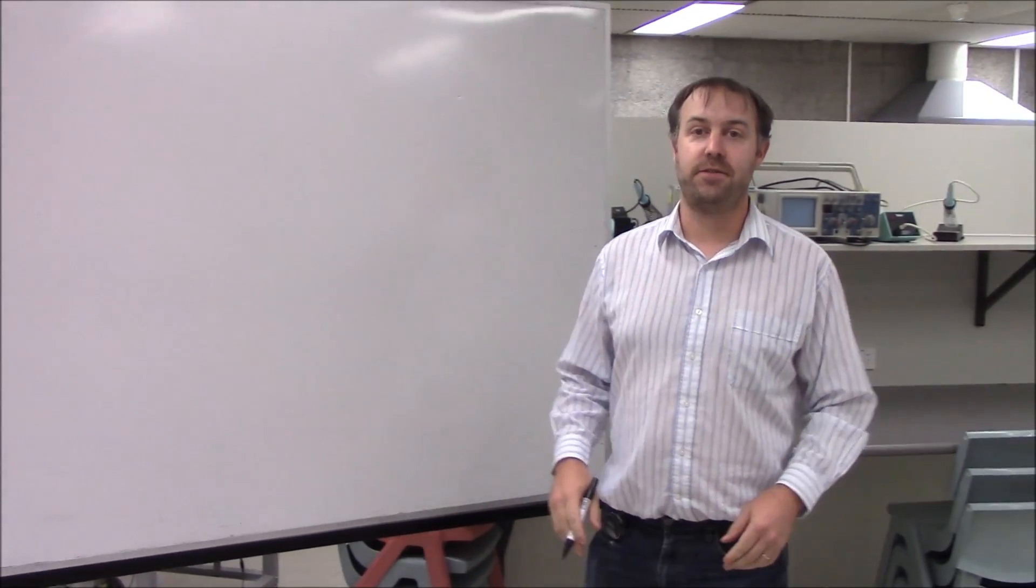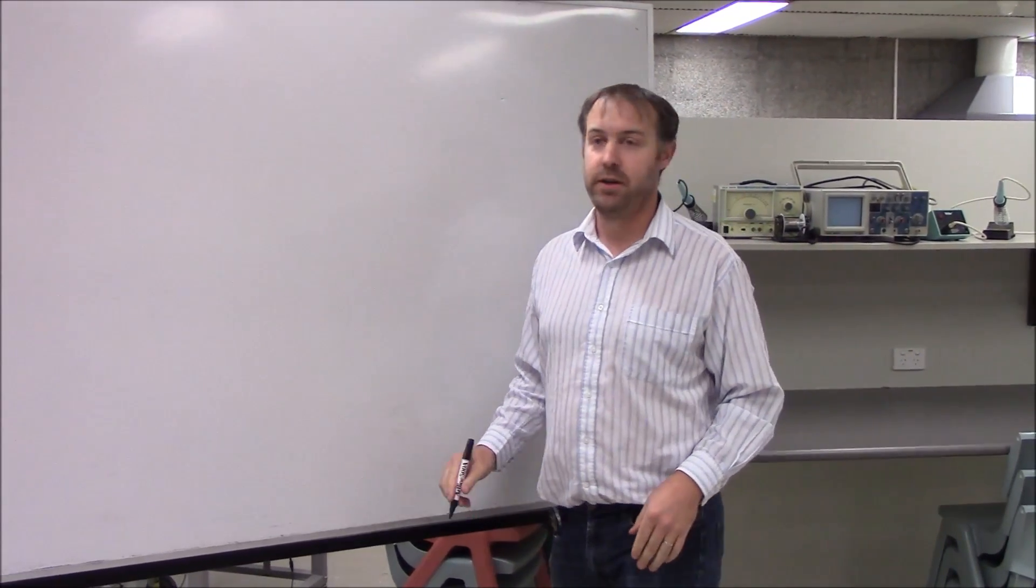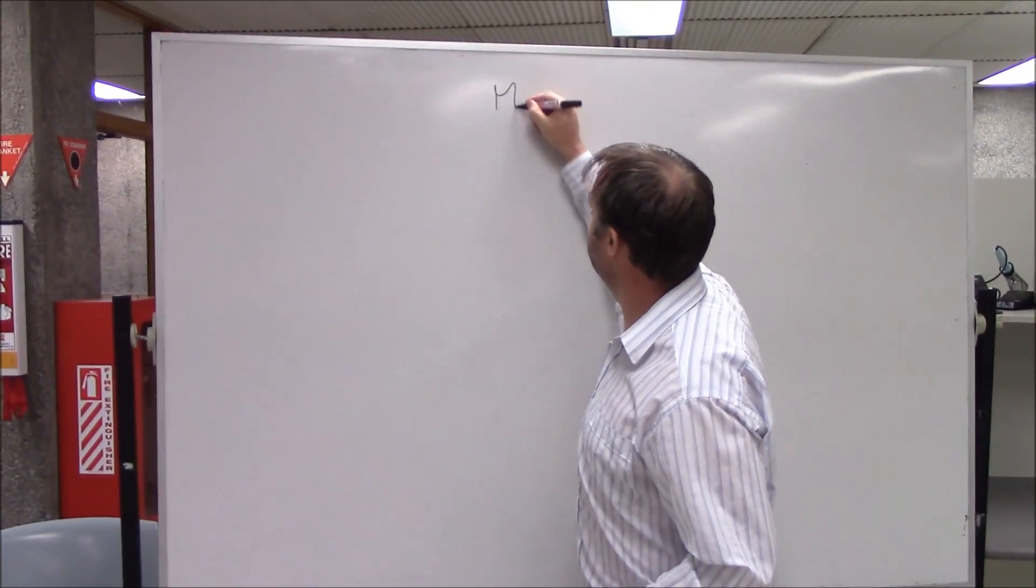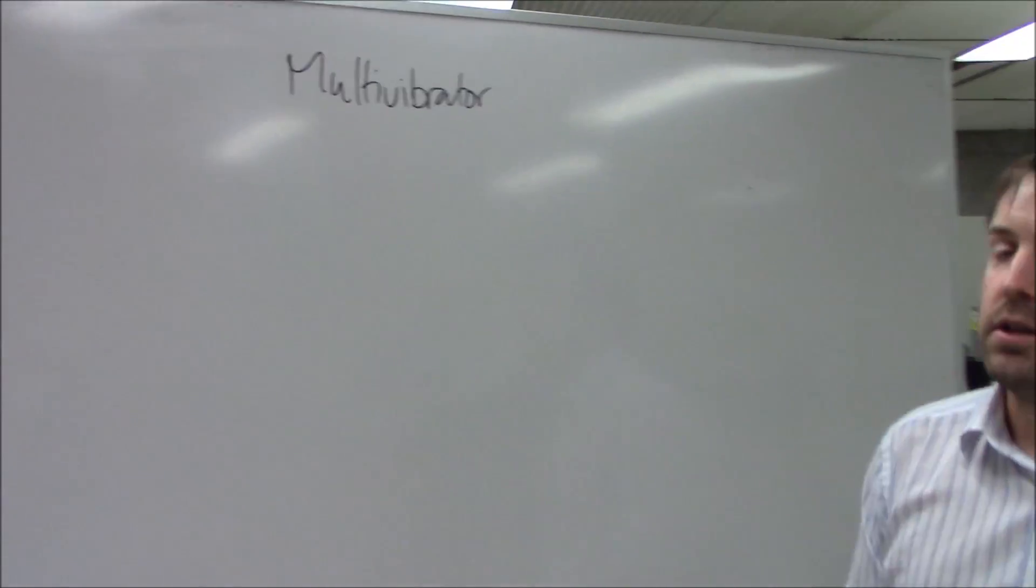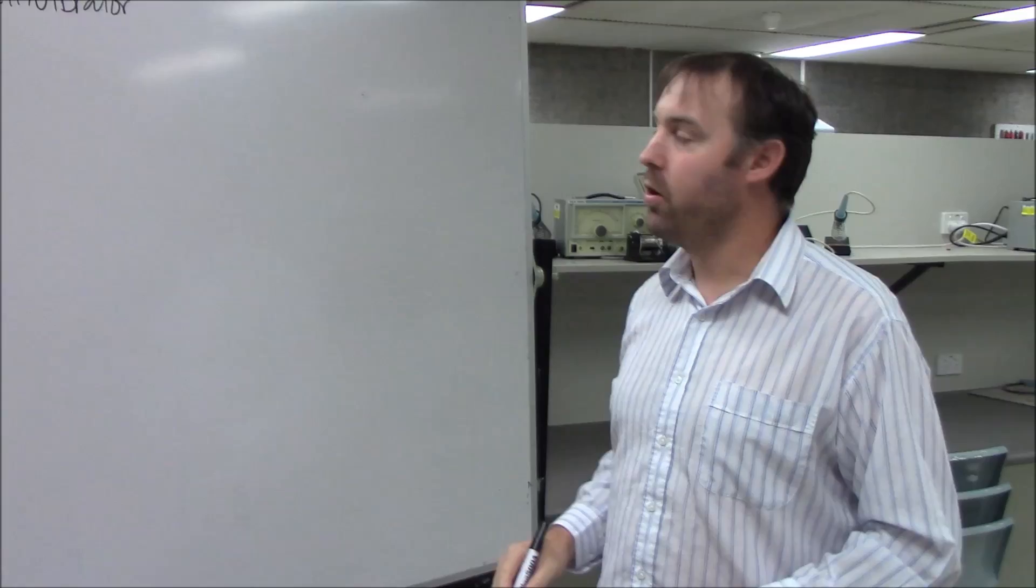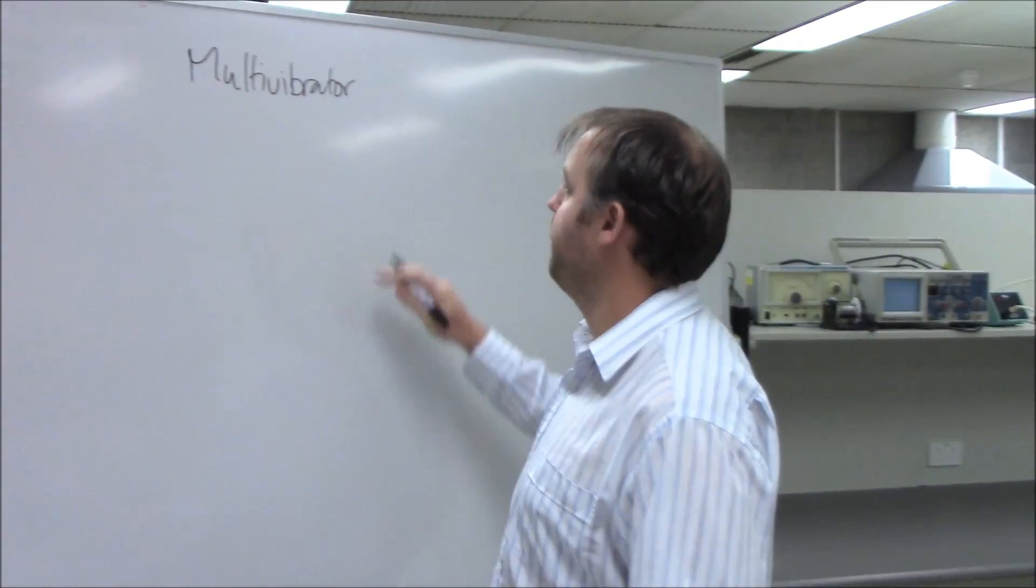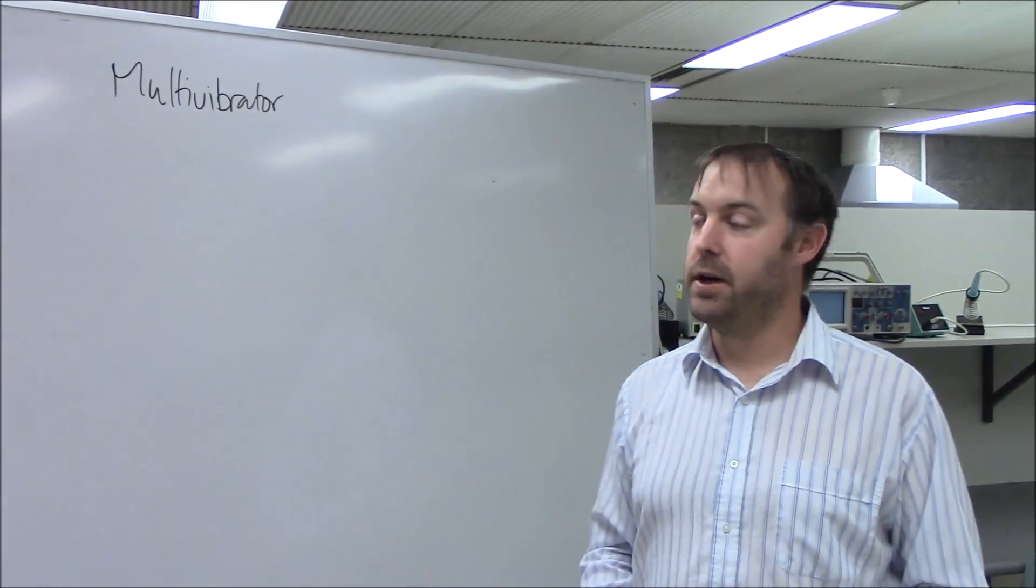So today we're going to have a look at a class of circuits that are called multivibrators. A multivibrator is a circuit that has two states, on and off, and the three different classes operate in different ways.